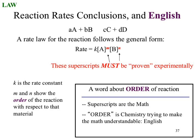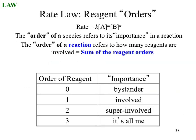If you had a first-order reaction, that reaction was somewhat dependent on that species. If it was second-order, that species is now super important to the mechanism. If it was zero-order, it was irrelevant to the overall reaction. So looking at rate laws, we can get an understanding of what is happening at the chemical level.